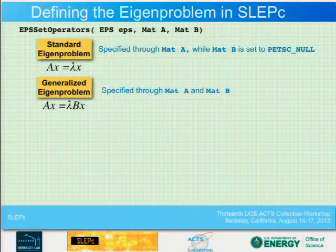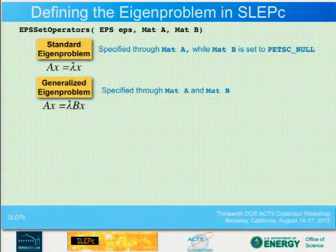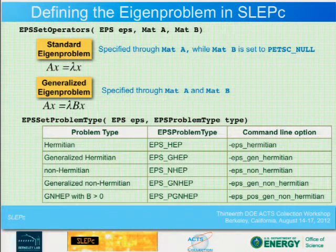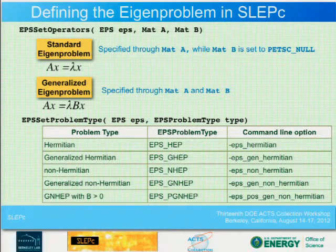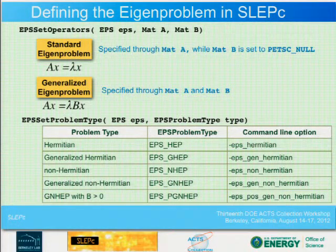When solving eigenvalue problems, for the standard eigenvalue problem we don't use matrix B, so it is set to PETSC_NULL. For the generalized eigenvalue problem, both matrix A and matrix B are specified. The interface is the same — we just pass PETSC_NULL for B in the standard case.